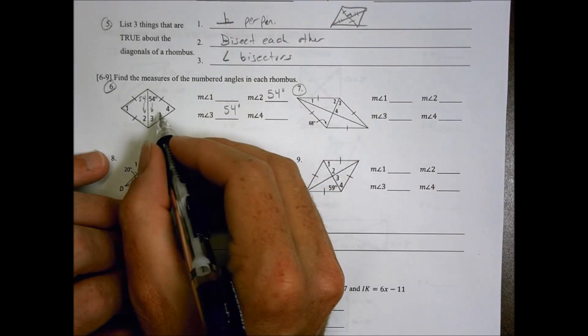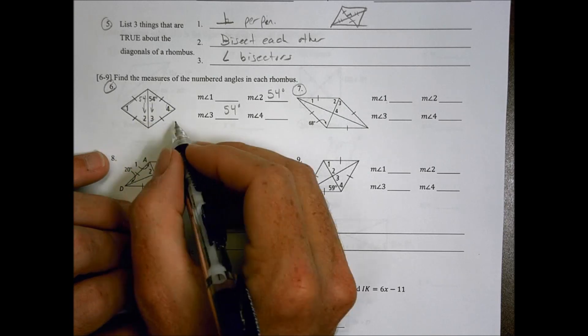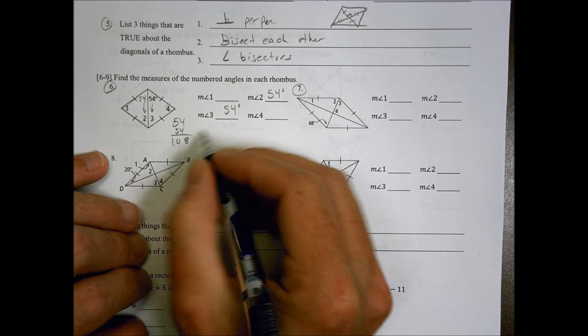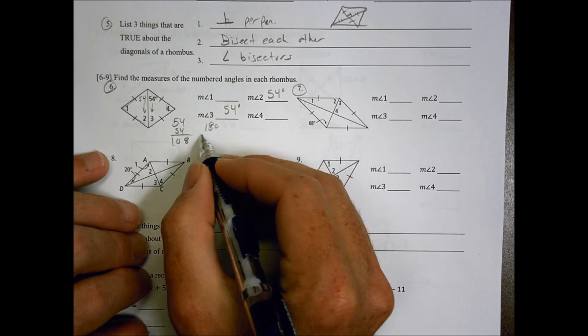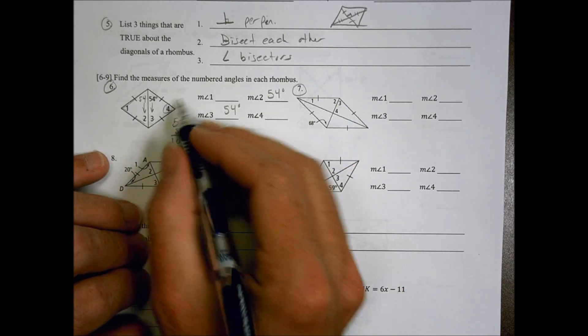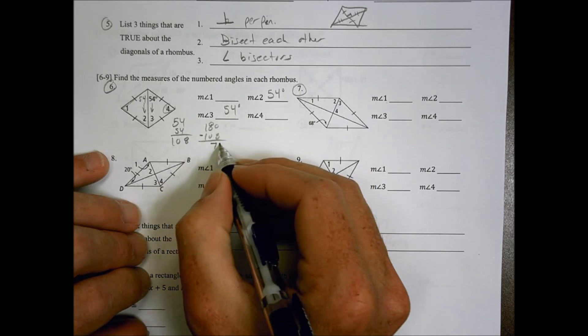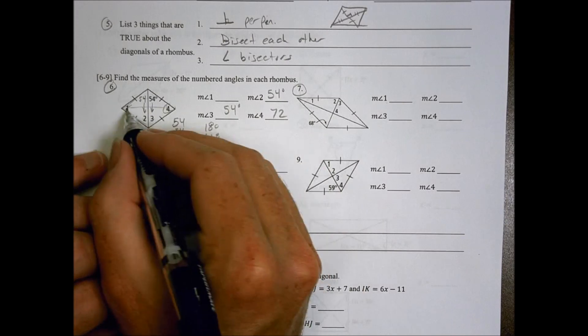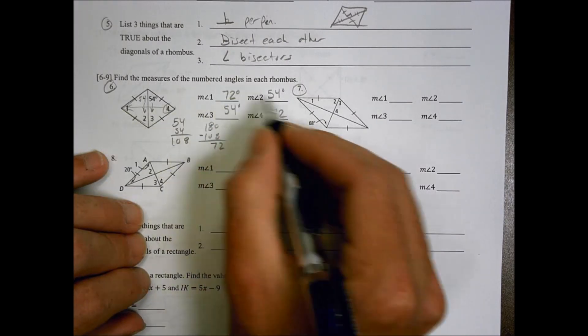And then what do I have left for the top of the triangle? If that's 54 and that's 54, that's a sum total of 108. So what I have left in the triangle for this top measurement there is going to be 72 degrees. So that's going to be 72 degrees and the opposite angle will also be 72 degrees.